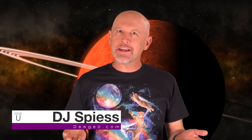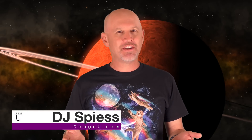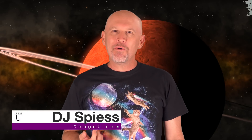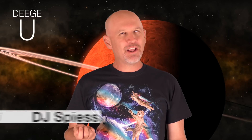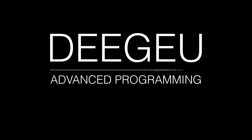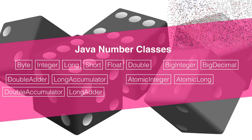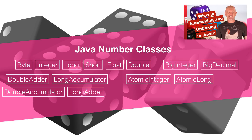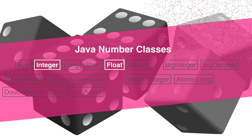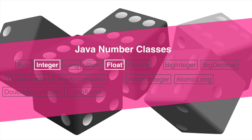We're going to take a deeper look at the Java number class. In this tutorial, we'll focus on the Java number constants available in the Java Integer and Java Float classes. There are many number classes — we saw that in the autoboxing and unboxing tutorial. For this tutorial, we're going to focus on the Integer and Float classes, which keeps the material simpler. The functionality available in these classes is also available in the other Java number classes.